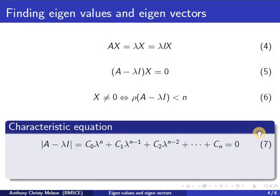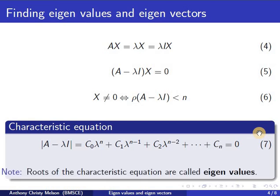So that results in the characteristic equation determinant A minus lambda I equal to 0, which is a polynomial equation of degree n. The roots of this characteristic equation are called eigenvalues.